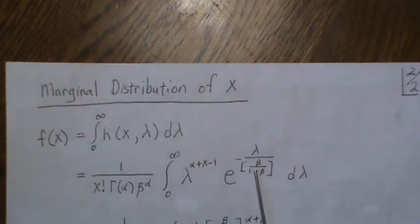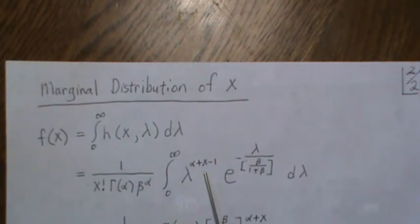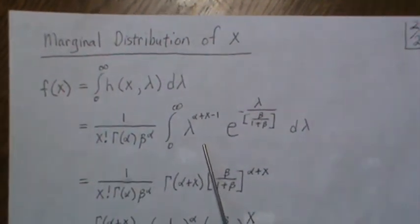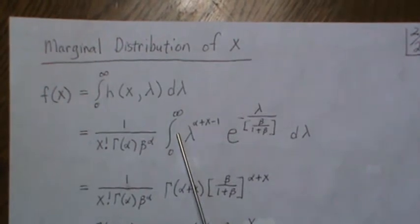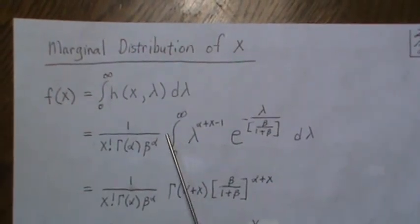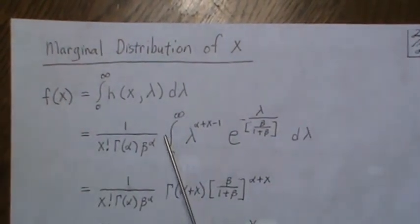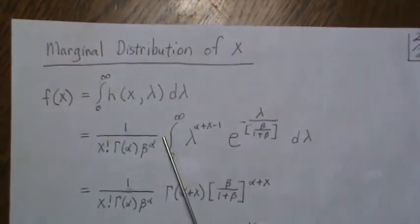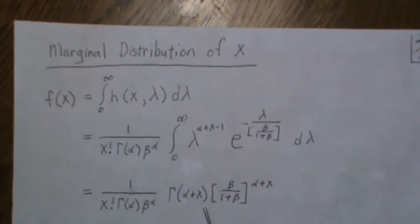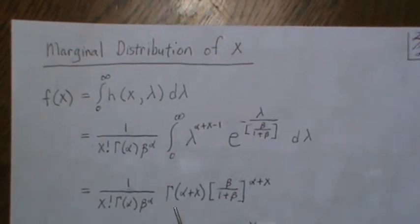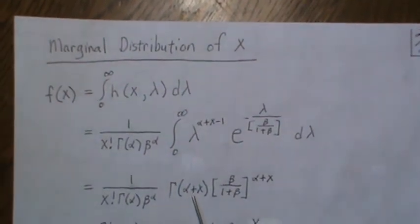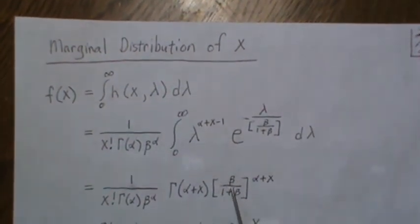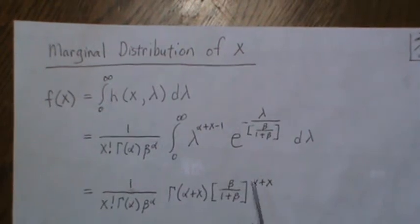Now this right here looks like a gamma distribution again where this is the new beta parameter and then alpha plus X is the new alpha parameter. So if we have the right constant out front and then take it times its reciprocal, then this piece integrates to one. So that piece in front is gamma of alpha plus X, and then this is the new beta, beta over 1 plus beta, raised to the alpha plus X.